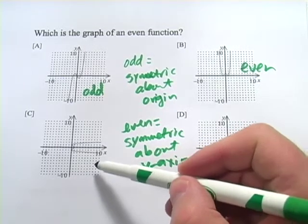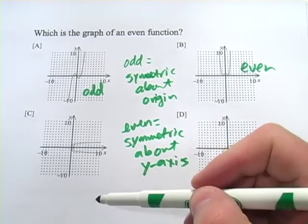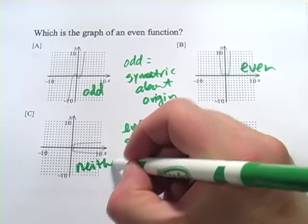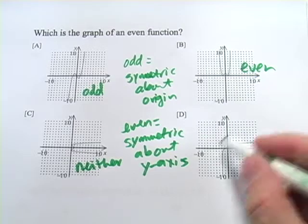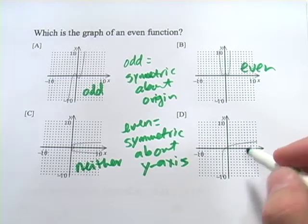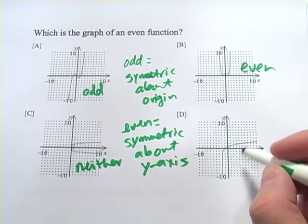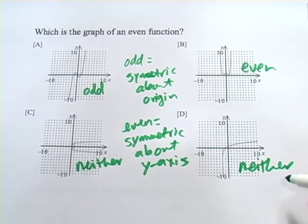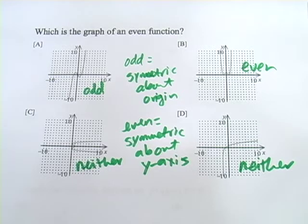This one is symmetric about the x-axis, but we don't really care about that, because that doesn't make it either even or odd. So this one's neither. And this one doesn't really have symmetry about either the axes or the origin. So this would be neither as well. So that's a little bit of work with odd and even functions and their symmetry.